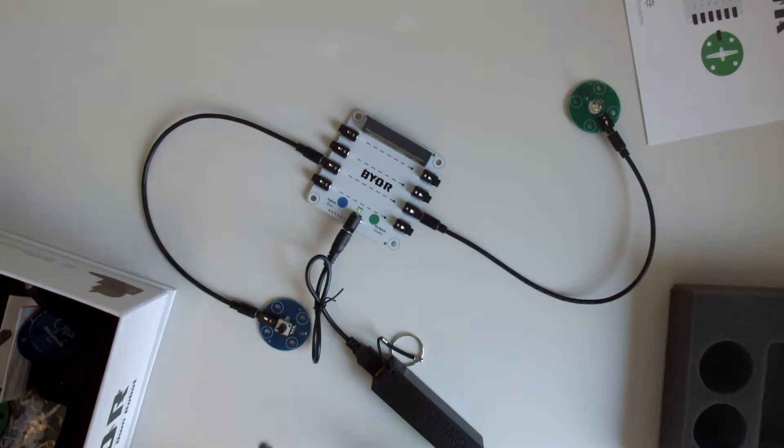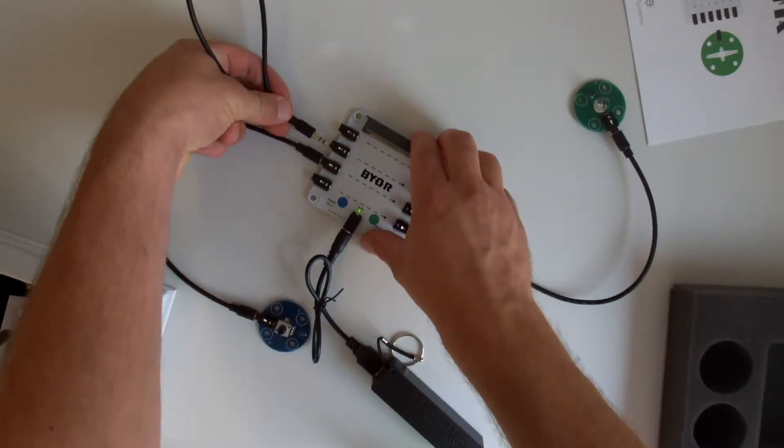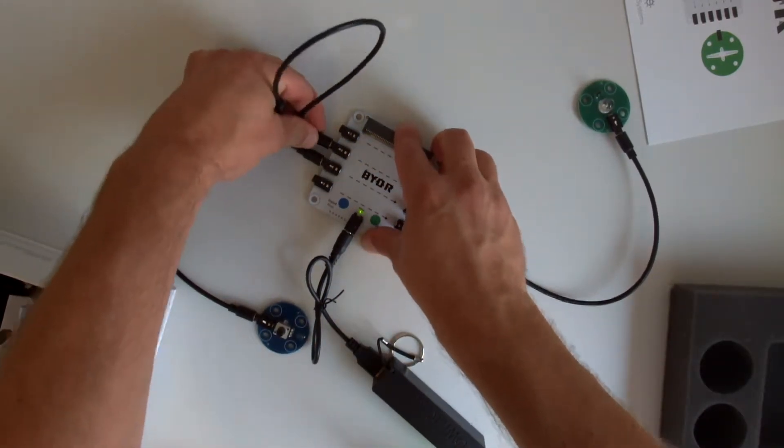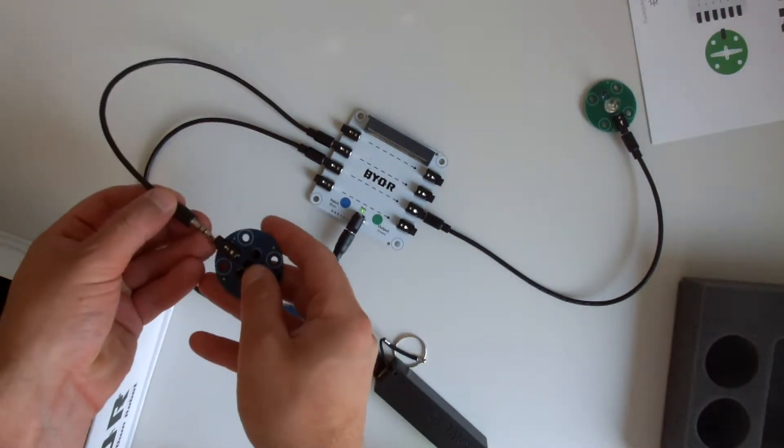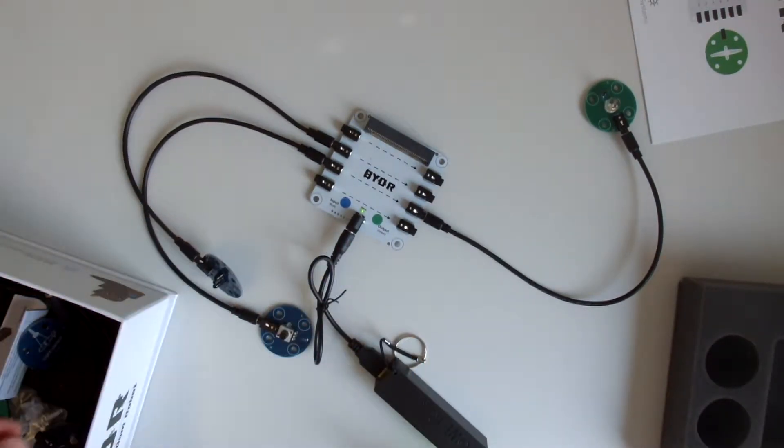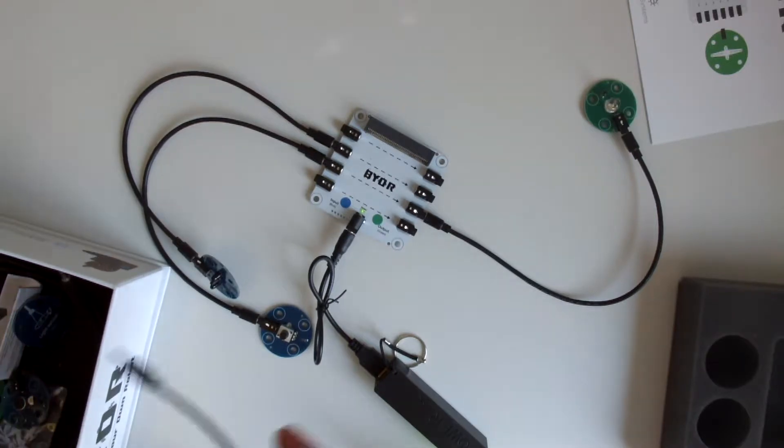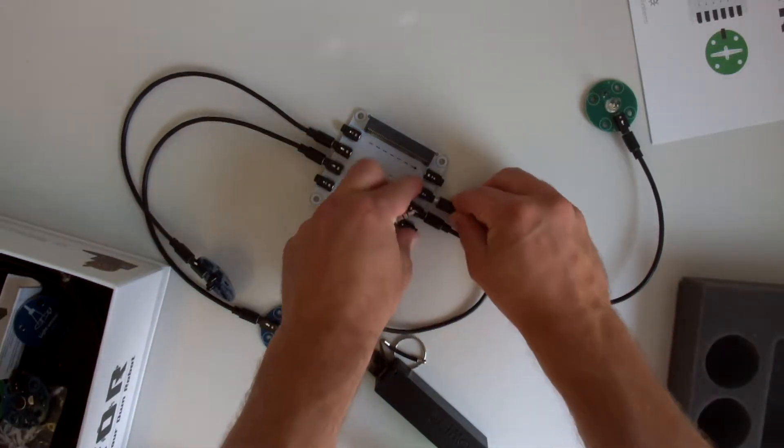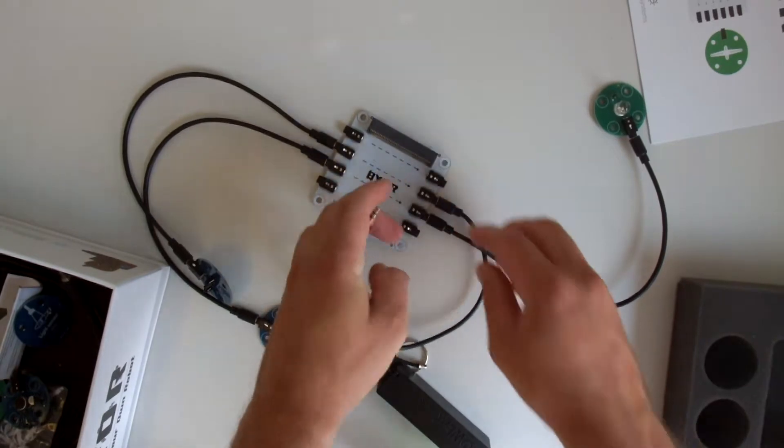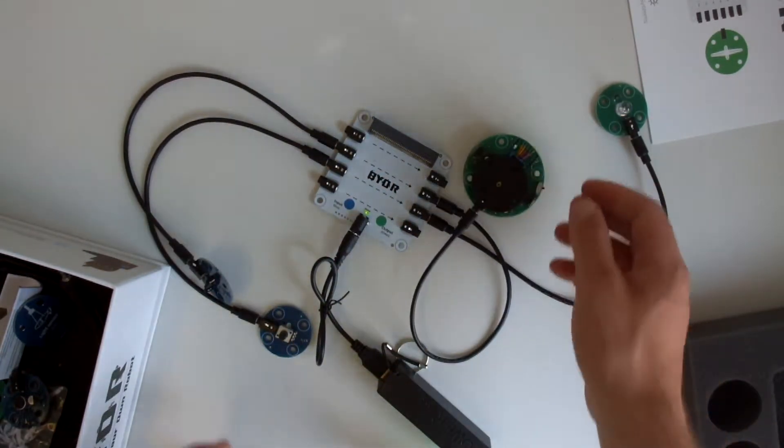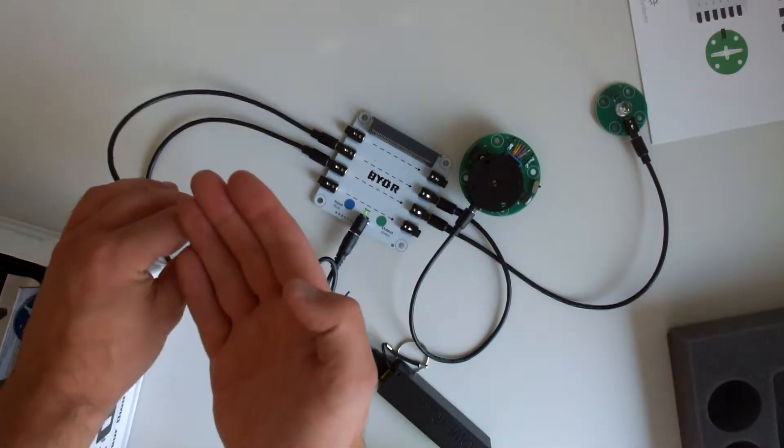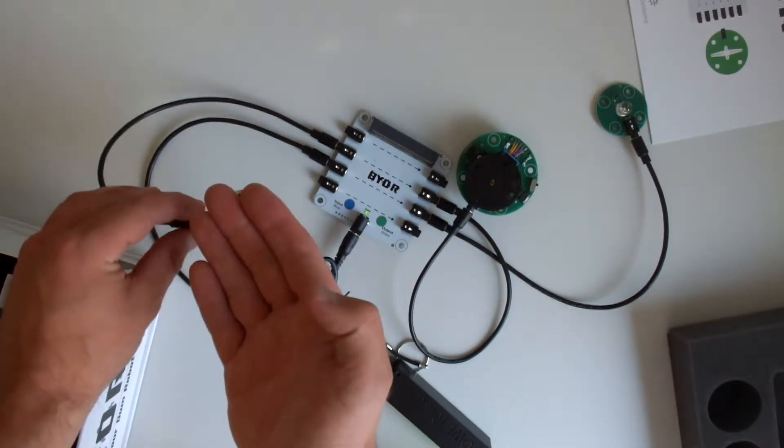You can attach several inputs and output parts on the board at the same time which means you can have different functionalities in just one creation. In this case I will attach the distance sensor again and I will attach a stepper motor. The stepper motor goes all the way around and it goes faster and slower according to the input it gets from the blue part which is attached on the opposite side of the board.